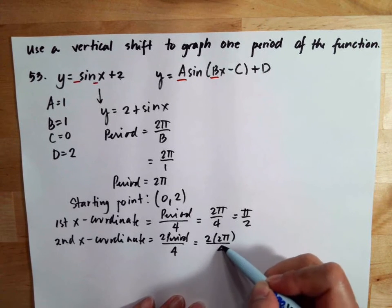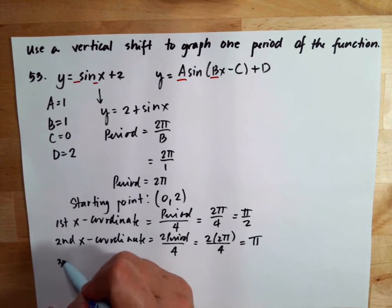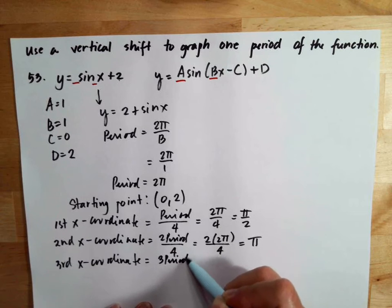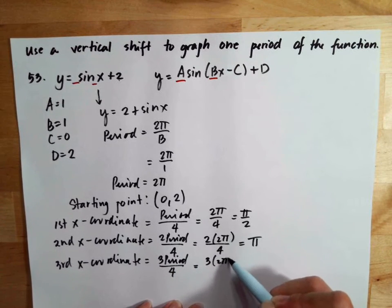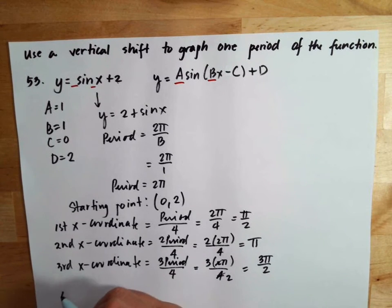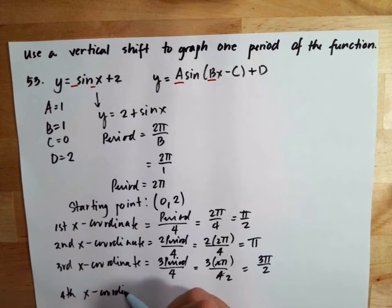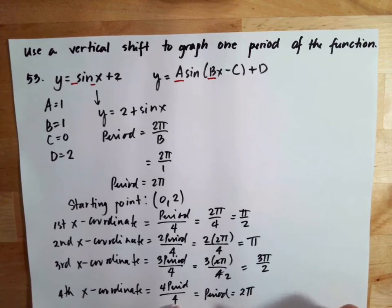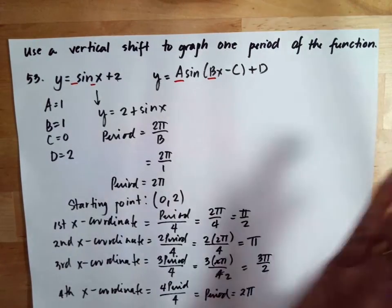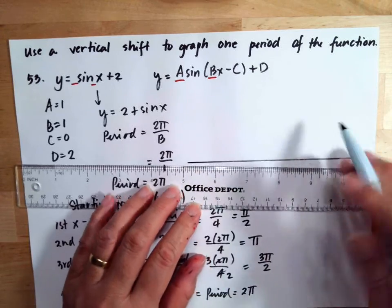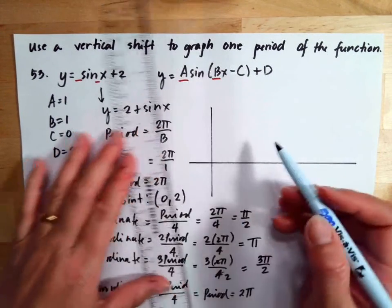Three times the period over four gives us three pi over two. And the end of one period, the fifth x-coordinate, is equal to the full period, which is two pi.